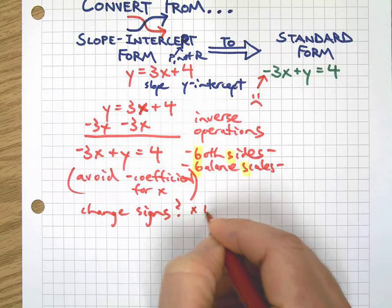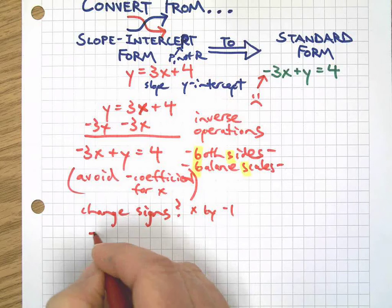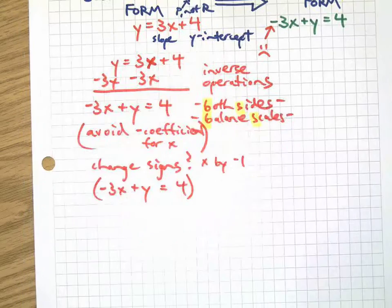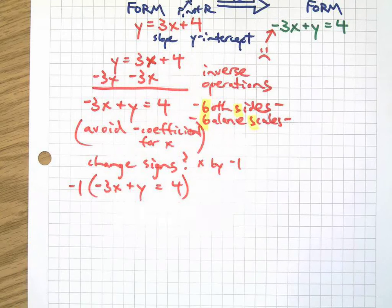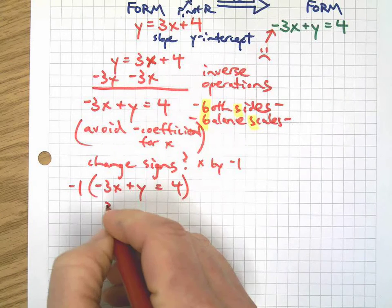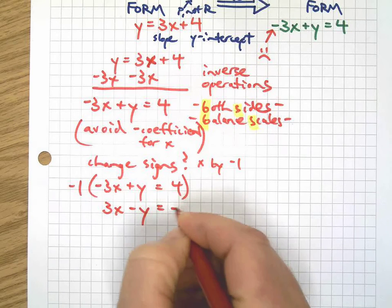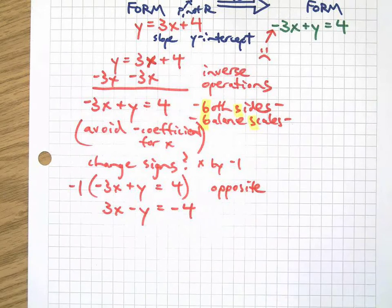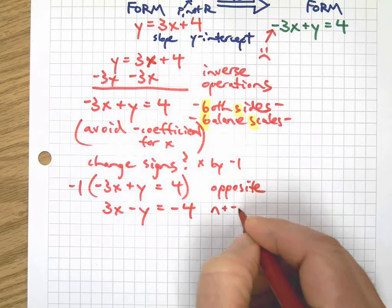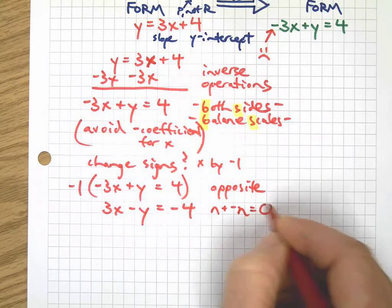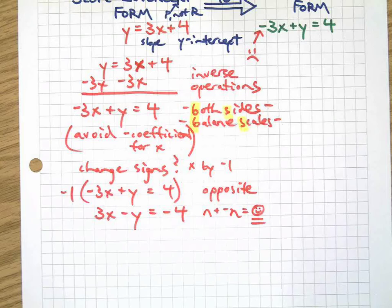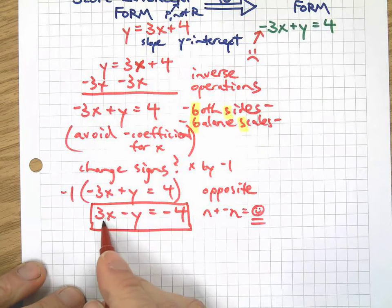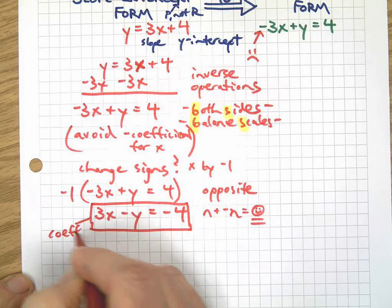So how do we do that? How do we change the signs? Well, quite simple. Multiply by negative 1, everything. So I can take this equation here and put parentheses around the whole thing. That may not be proper, but to demonstrate to you the visual of if I multiply everything by negative 1, what happens is the sign of everything changes, becomes the opposite of what it was. You remember what opposite means, right? Means some number plus the negative version of that number equals zero. Okay, that's what opposite means.